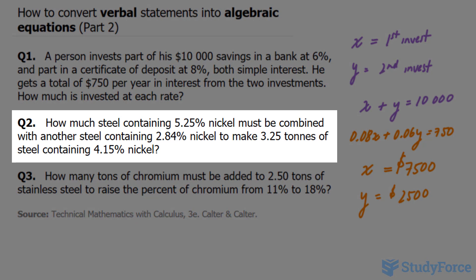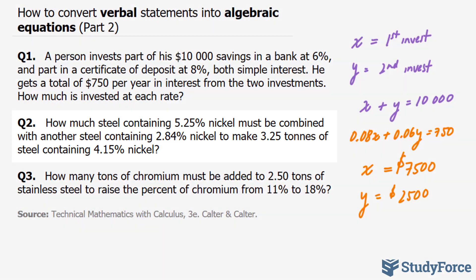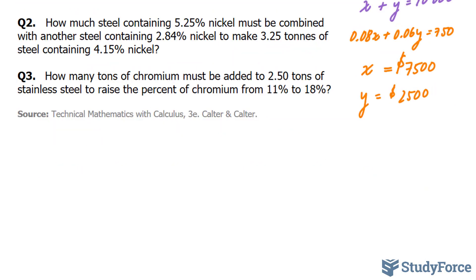In question two, we're asked, how much steel containing 5.25% nickel must be combined with another steel containing 2.84% nickel to make 3.25 tons of steel containing 4.15% nickel? So, to do this question, we have two samples of steel. One that is 5.25%, and we'll call the first one, so this is Q2.